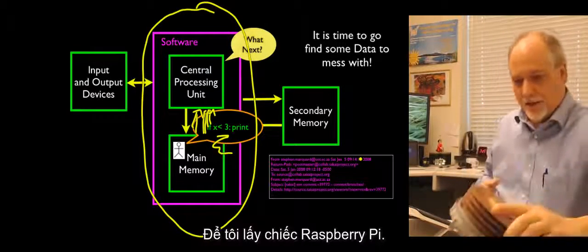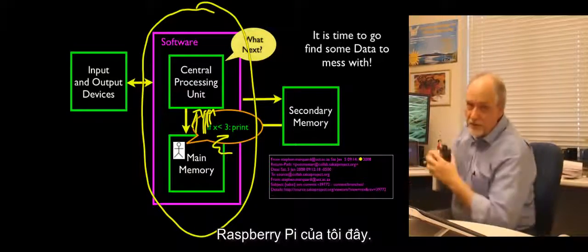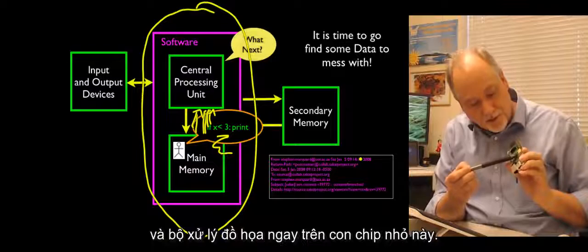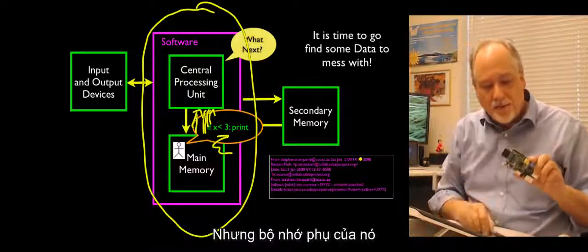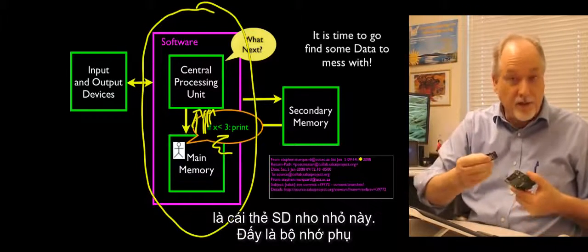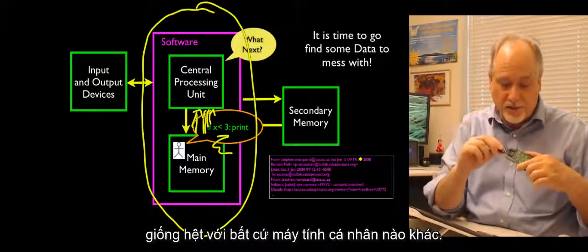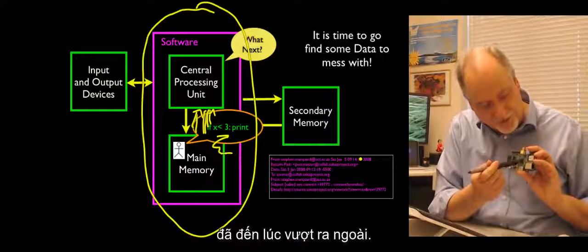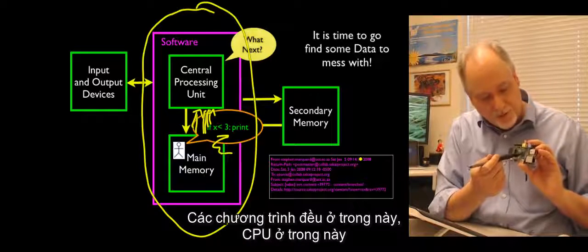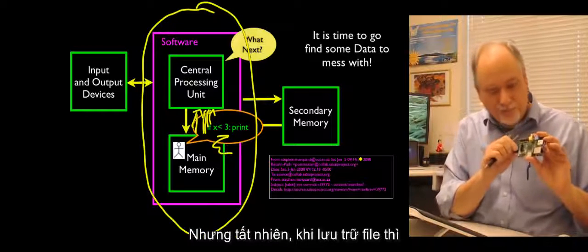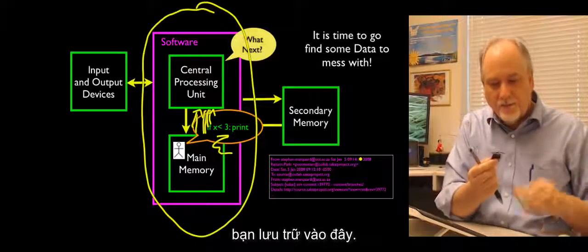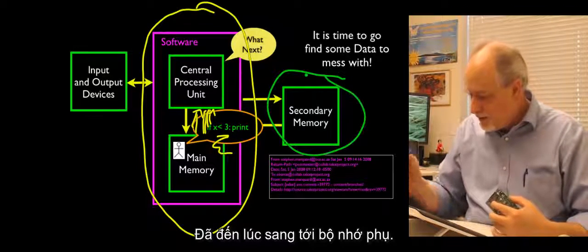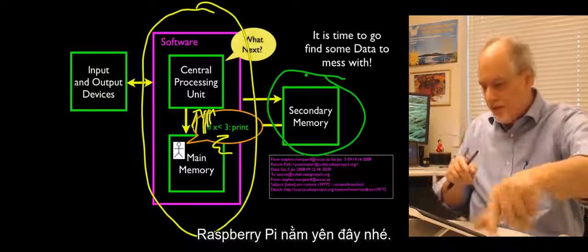So now we are finally going to escape from the central processing unit and the memory. We'll still write programs and have variables in here, but now we're going to use the disk, the secondary storage. If I grab my Raspberry Pi, here's the secondary memory—this little SD card. The structure of the Raspberry Pi is exactly the same as any other personal computer, just smaller and less expensive. Now we're going to start looking at data on the disk drive.